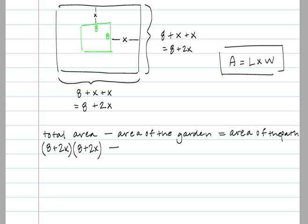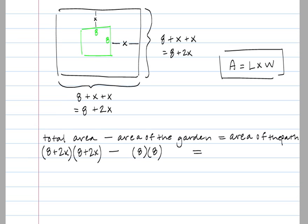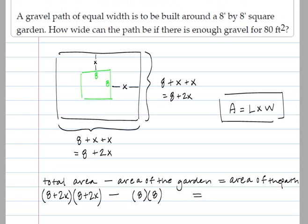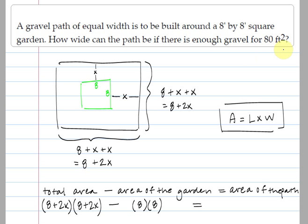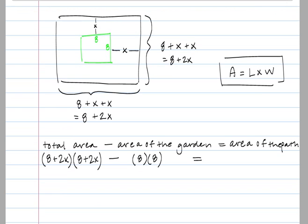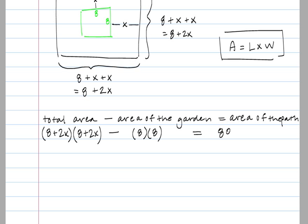How can we represent the area of the garden? Well, if the garden measures 8 by 8, then the area being length times width implies that the area of the garden is 8 times 8. And the area of the path is actually given in the original problem. Since we're told that we have enough gravel to cover 80 square feet, that implies that the area of the path is going to be 80.